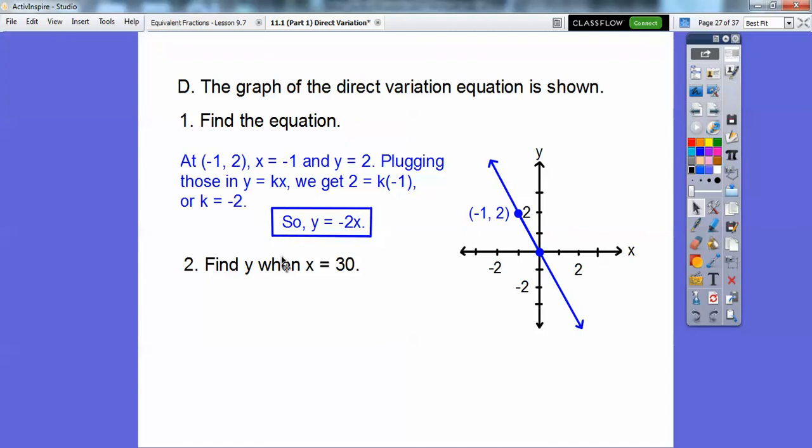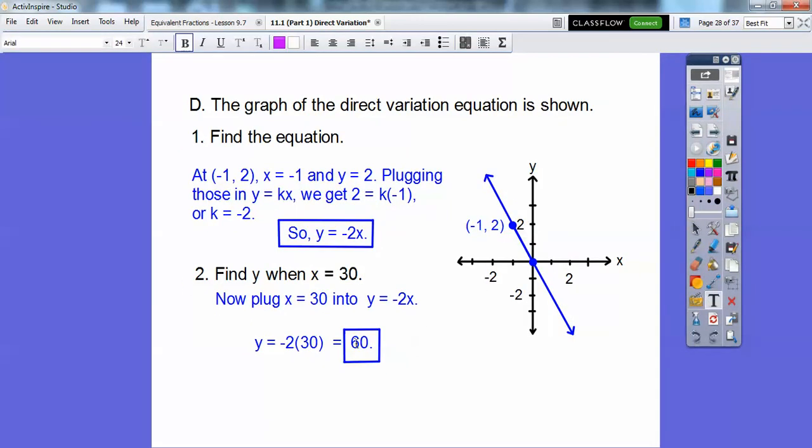Now this says find y when x is 30. Well, once we get the equation, we just plug in 30 right there. So negative 2 times 30 is going to get us negative 60. My bad. Let's put that negative in there. So negative 60.